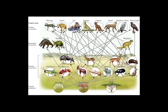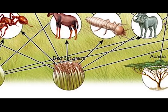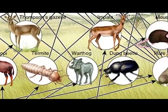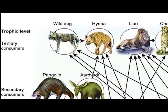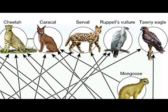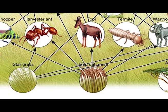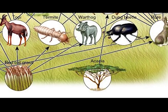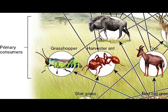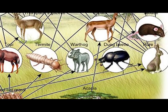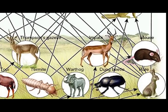The food web in the savannah consists of the primary producers, the primary consumers, secondary consumers, and the tertiary consumers, also known as predators. The primary producers in the savannah are the star grass, red oak grass, and acacia tree. The primary consumers of the savannah include the grasshopper, harvester ant, topi, termite, warthog, dung beetle, the hare, wildebeest, Thompson's gazelle, impala, and the mouse.